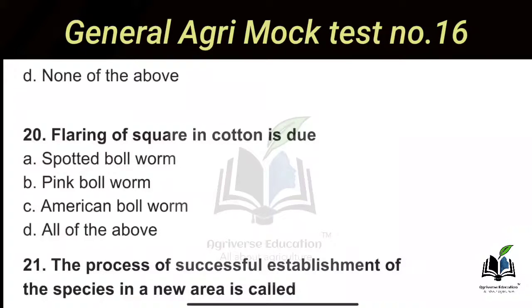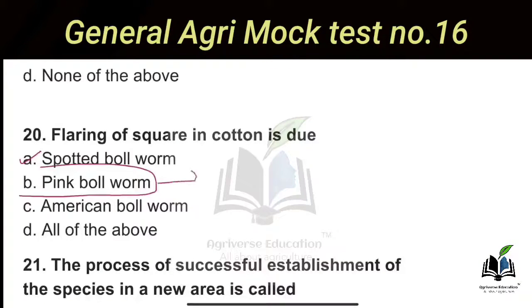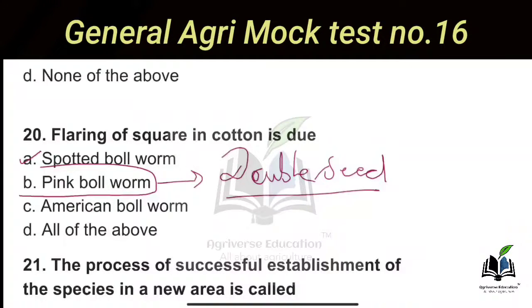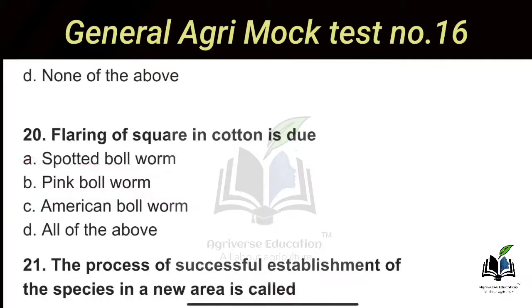The next question: Flaring of square in cotton is due to which insect? Options are spotted bollworm, pink bollworm, American bollworm, and all of the above. The right answer is Option A — spotted bollworm. Whereas in case of pink bollworm, the symptom is double seed formation. So double seed formation is a symptom of pink bollworm, whereas flared square is a symptom of spotted bollworm in cotton crop.